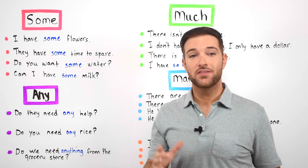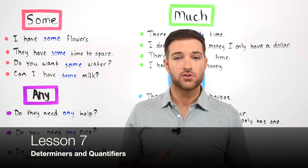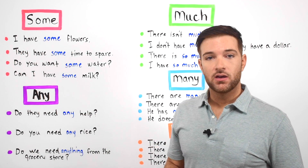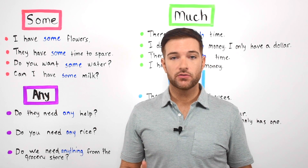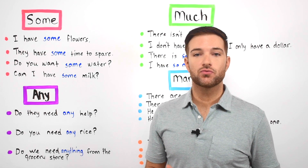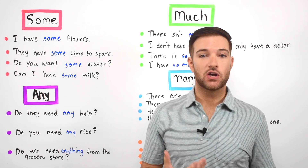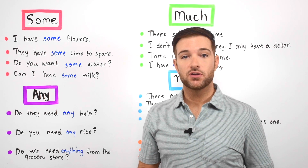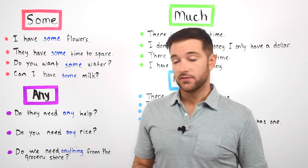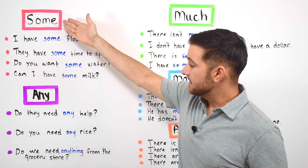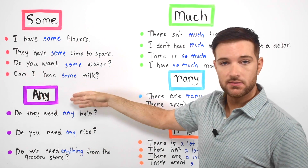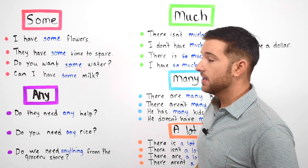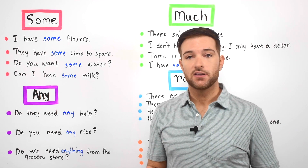Hi everyone, welcome back to the course. This is lesson number seven. In today's lesson we are going to be looking at the words 'some' and 'any.' These are words that many people who are learning English get confused about because the rules regarding their usage can seem very complicated and vague. Even Americans sometimes get confused on when to use one word over the other, so today we are going to learn when and how to use them.